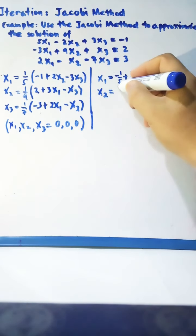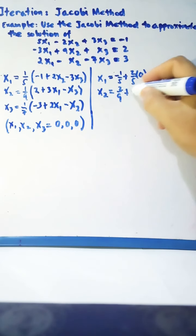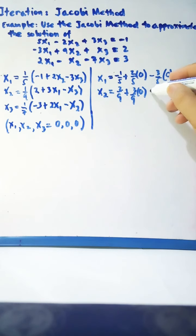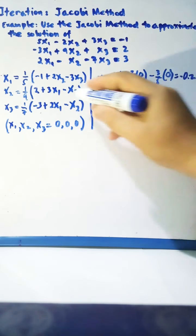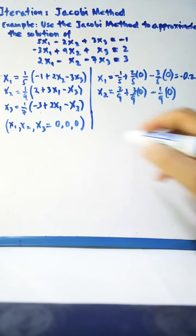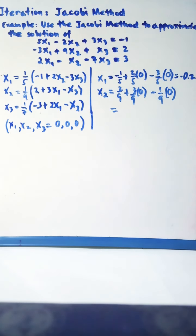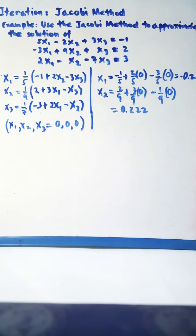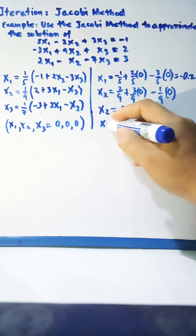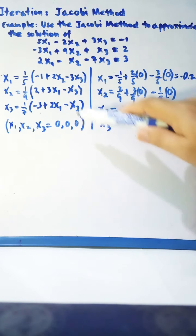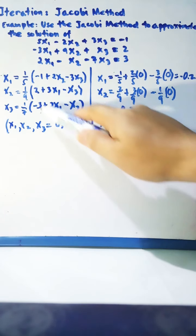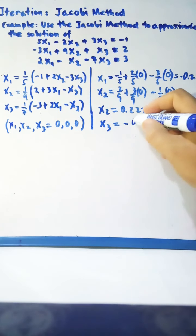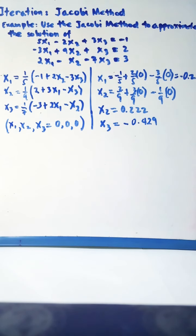For x₂: x₂ = (1/9)(2 + 3(0) - (0)) = 2/9, which equals 0.222. For x₃: substituting x₁ = 0 and x₂ = 0 gives x₃ = (1/7)(-3 + 2(0) - (0)) = -3/7, which is equivalent to negative 0.429. These are the values from our first iteration.